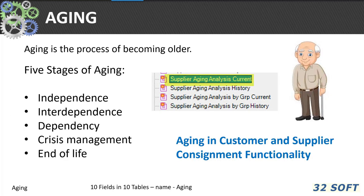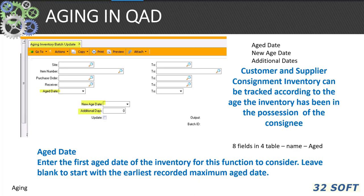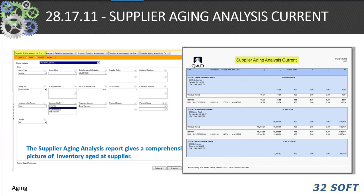Aging is simply the process of becoming older. QAD uses aging particularly in customer and supplier data, such as in the aging of customer and supplier consignment functionality. QAD uses 718.11 aging inventory batch update to recalculate customer and supplier consignment inventory that has been in the possession of a consignee for a specified number of periods. The 28.17.11 supplier aging analysis report gives us a status of consigned inventory displayed for a particular supplier or item.